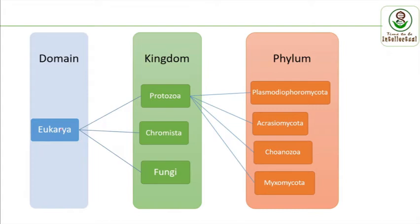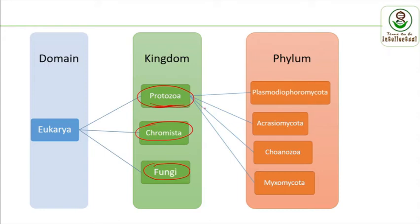Under the Eukarya domain there are five kingdoms, but phytopathogens come under three of them: Protozoa, Chromista, and Fungi. In Chromista we also have some false fungi such as Oomycetes. Under Protozoa we come across four important phylums: Plasmodiophyromycota, Acraciomycota, Canosovamycota, and Myxomycota.